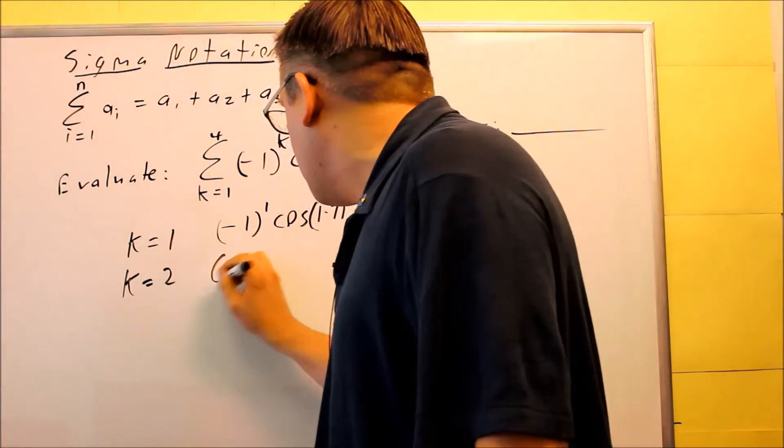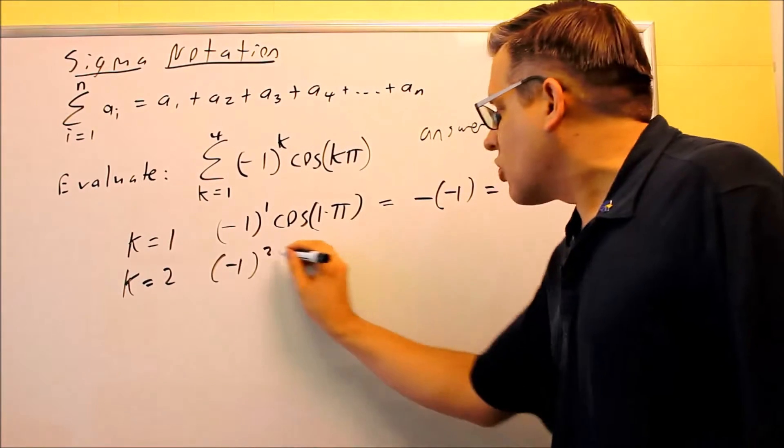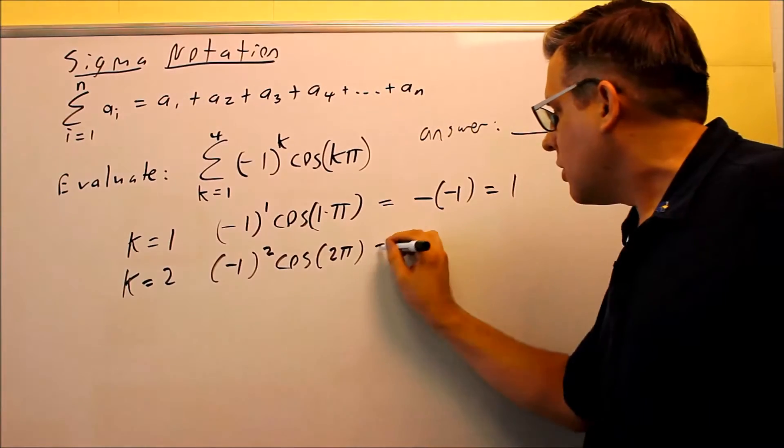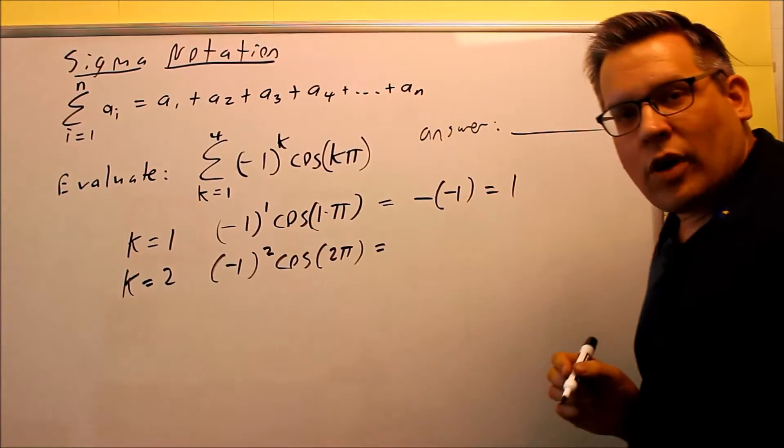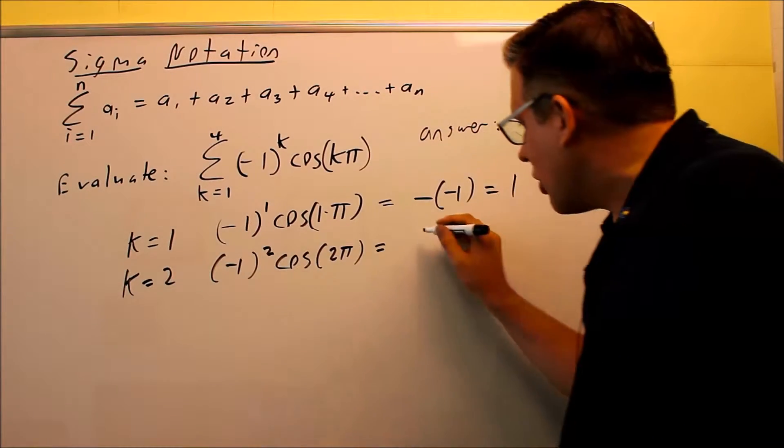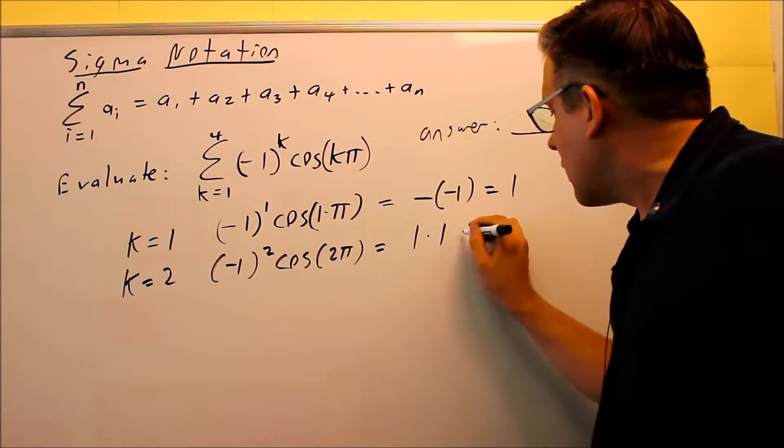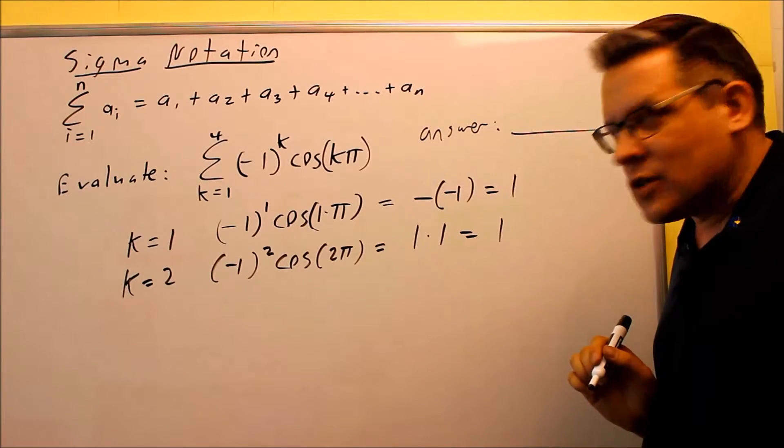Next, you'll let k equal 2, negative 1 squared, and you have cosine of 2π. Now negative 1 squared is positive, so we get a positive 1. And then cosine of 2π, that's also positive 1, so we get 1 as our answer there.